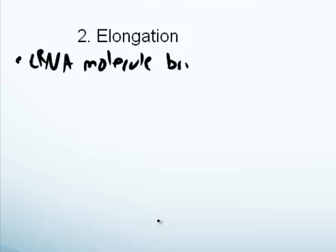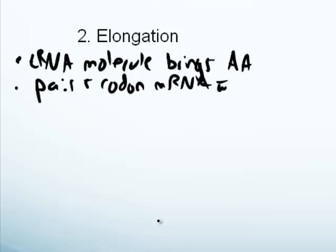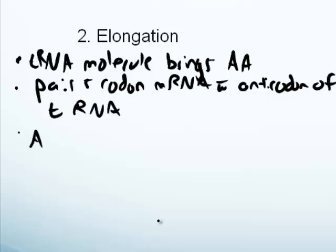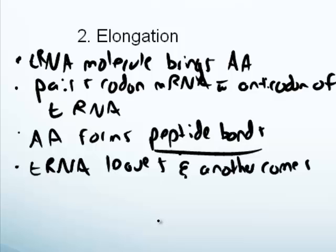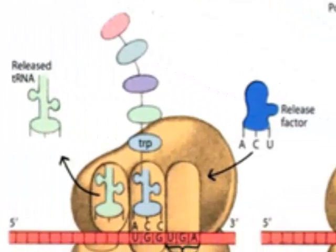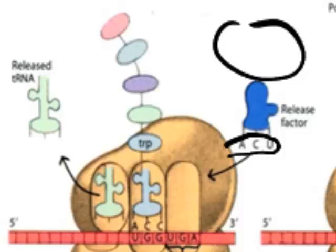Elongation continues: each tRNA molecule brings another amino acid and pairs the codon of the mRNA with the anticodon of the tRNA. The amino acids form peptide bonds between them, and once the peptide bond is formed, the tRNA leaves and another comes. This continues until a polypeptide chain is formed. Then we reach termination: a stop codon is reached, and an anticodon matches up with it, but notice there is no amino acid attached — instead it has something called a release factor.